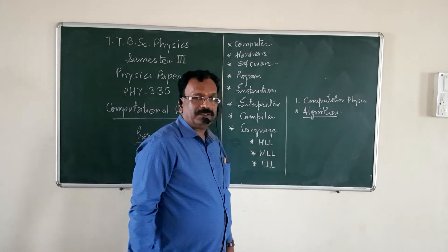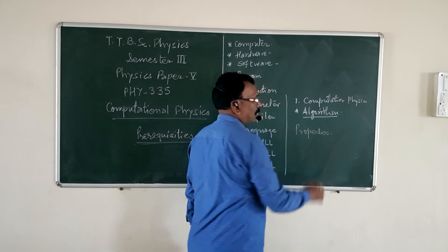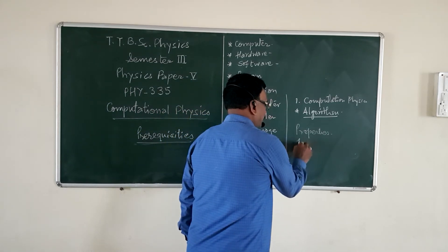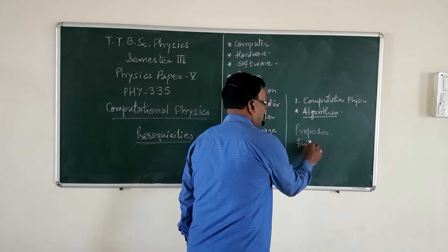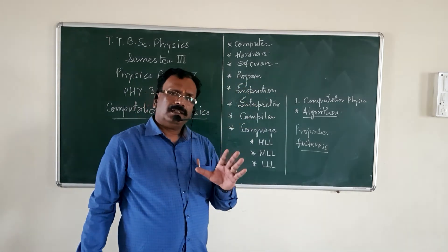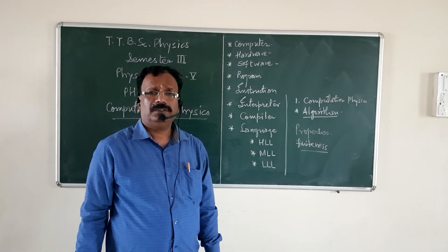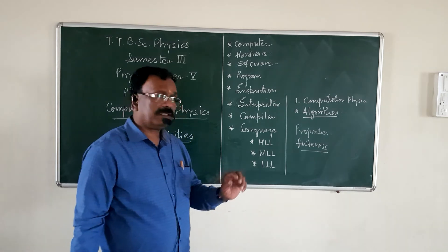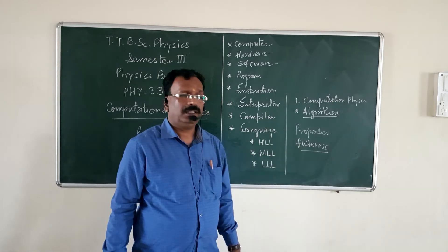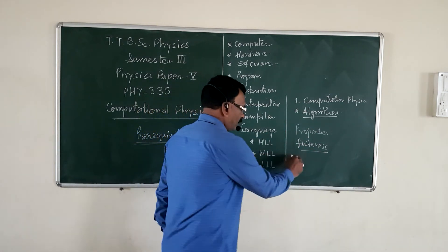There are some important properties of an algorithm. The first property is finiteness. Finiteness means we should know where the program is going to start and where it is going to stop. Start and stop are the two basic important quantities regarding finiteness, and finiteness is an important property of algorithm.